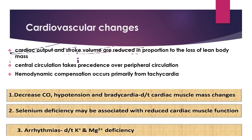Cardiac abnormalities occur due to different reasons. Decreased cardiac output, hypotension, and bradycardia occur due to cardiac mass changes. Keshan disease, caused by selenium deficiency, can cause cardiomyopathy and may be associated with reduced cardiac output. Arrhythmia occurs due to potassium, magnesium, and other electrolyte deficiencies.